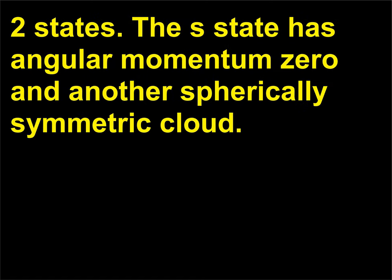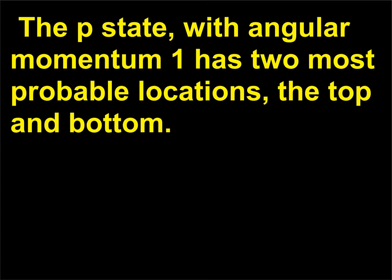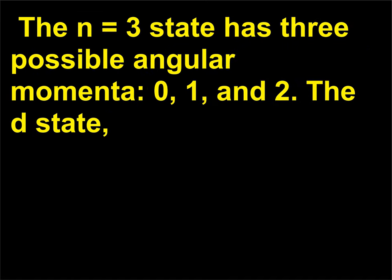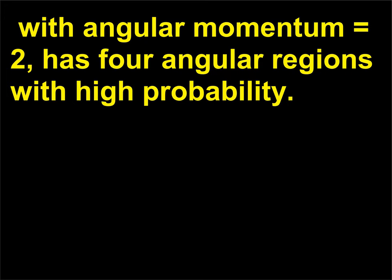There are two n = 2 states. The S state has angular momentum 0 and another spherically symmetric cloud. The P state, with angular momentum 1, has two most probable locations — the top and bottom. The n = 3 state has three possible angular momenta: 0, 1, and 2 (the D state). With angular momentum 2, the D state has four angular regions with high probability.